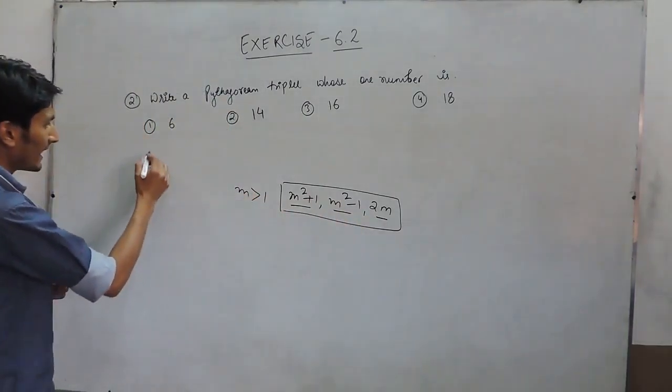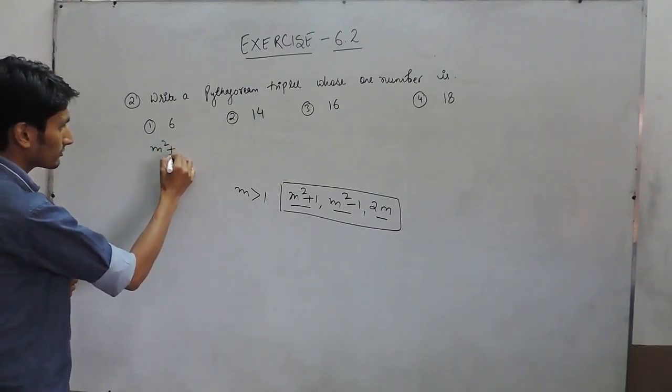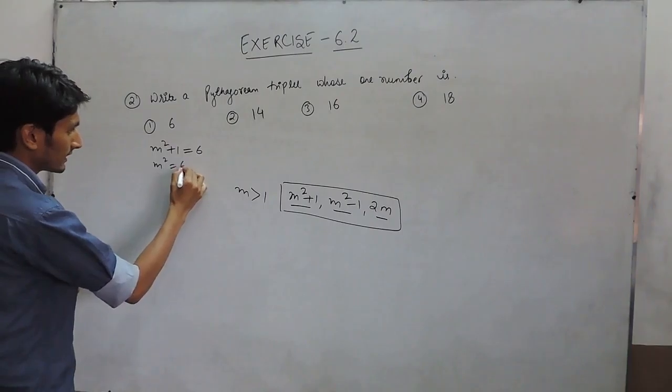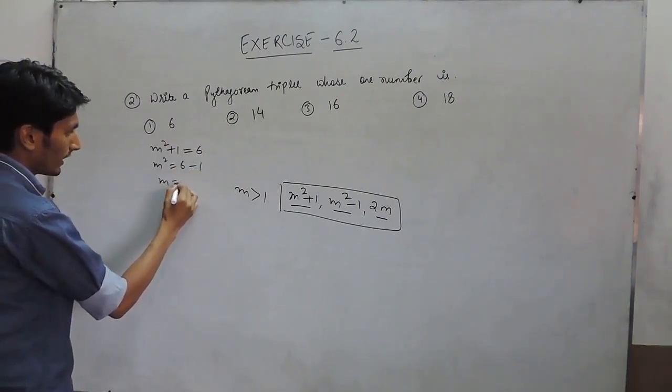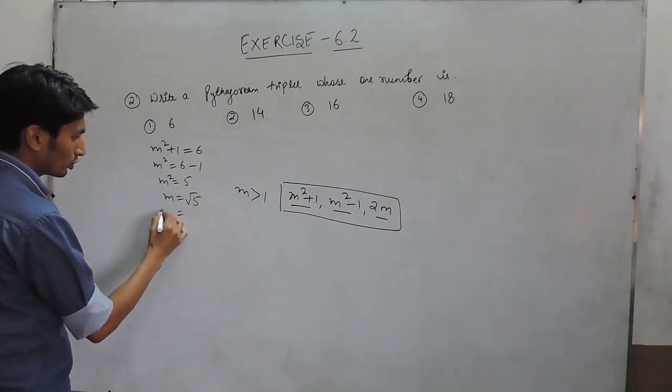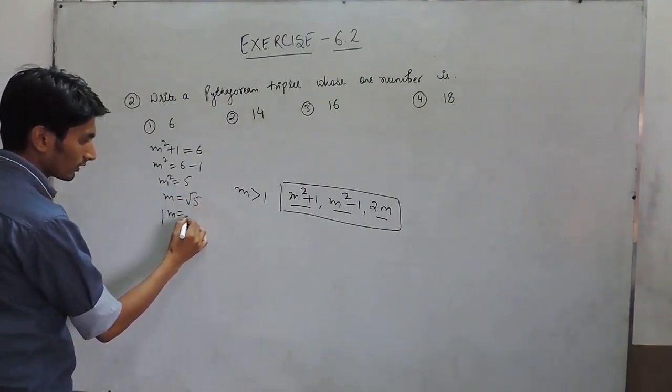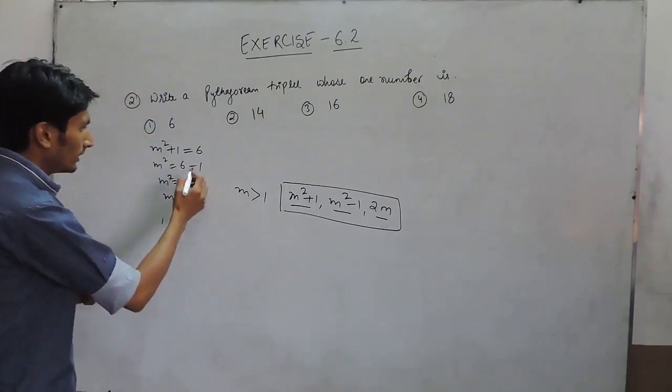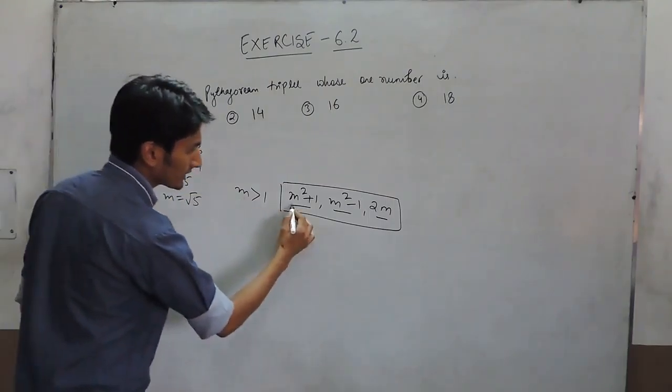Putting the value of 6 as m² + 1 = 6, so m² is 6 - 1, so m² is 5. So value of m is √5 which is not a perfect number. So 6 is not this number.